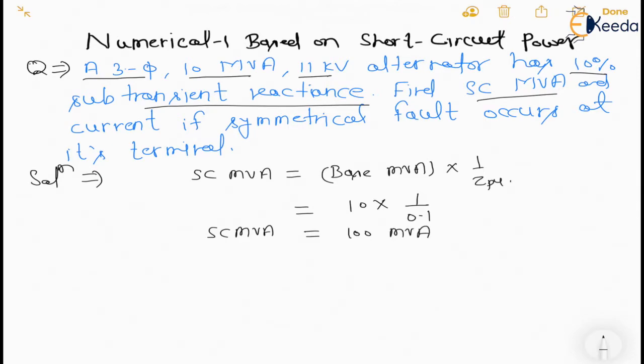And now we need to calculate short circuit current. So first we will find out the base current. We know in case of three phase, IB is equal to MVA into 1000 upon root 3 into KVB.